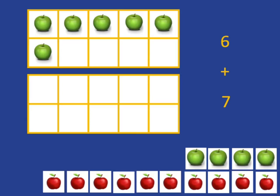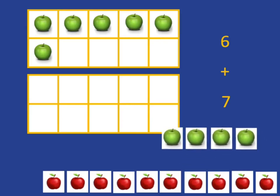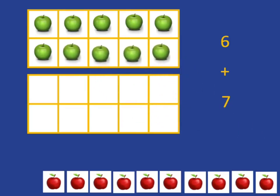So what we are going to do is we're going to use that anchor number of 10. We need to add on 7. Well, we can see quite easily that we need these 4 apples to fill in the gap to make up 10.